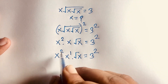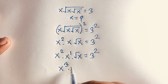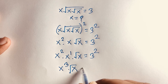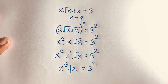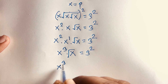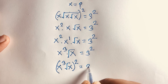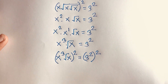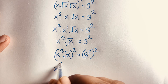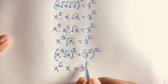The exponents 2 and 1 combine to give x to the power 3, times x to the power square root x, equal to 3 squared. Squaring both sides again gives x to the power 3 times square root x, whole squared, equal to 3 to the power 4. This simplifies to x to the power 6, with the square root cancelled, equal to 3 to the power 4.